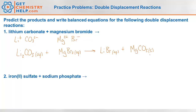Last step — let's balance this. There are two lithiums on the reactants and one on the products, so we'll make that two. Now we've got two bromides on the products and two on the reactants. One magnesium on the reactants, one on the products. One carbonate on the reactants, one on the products. So we're balanced.